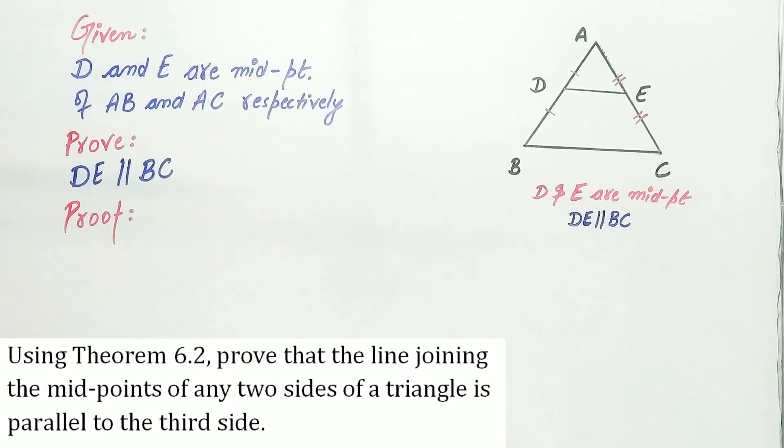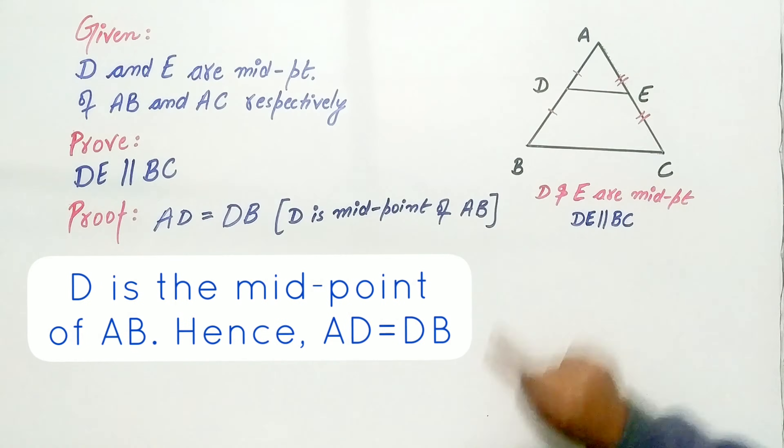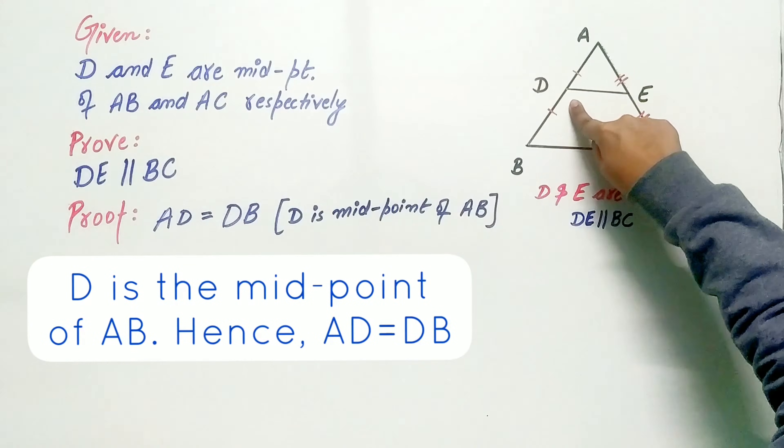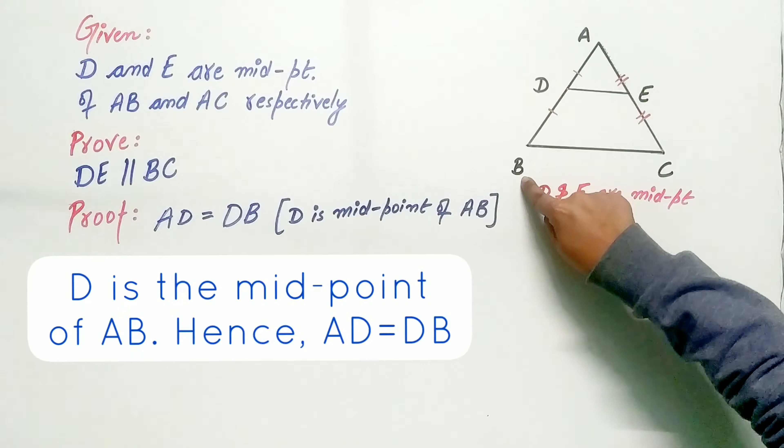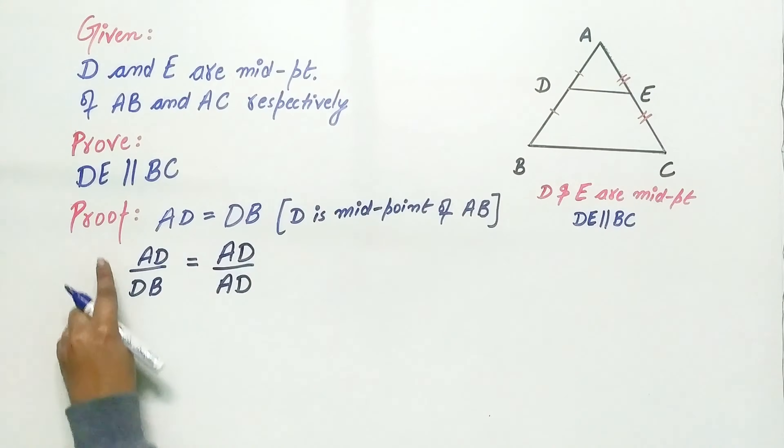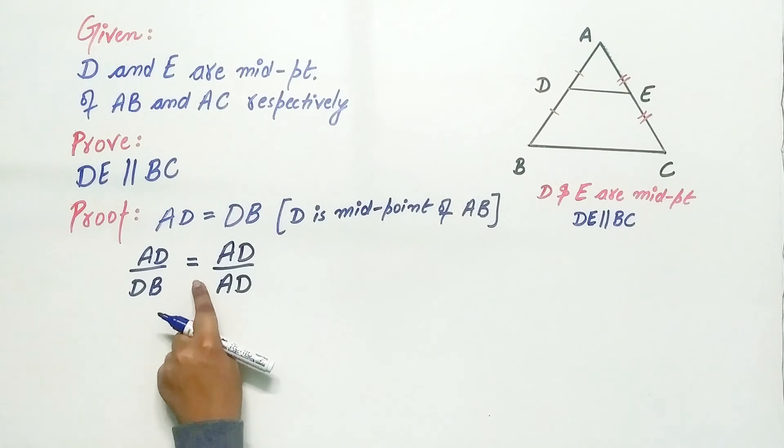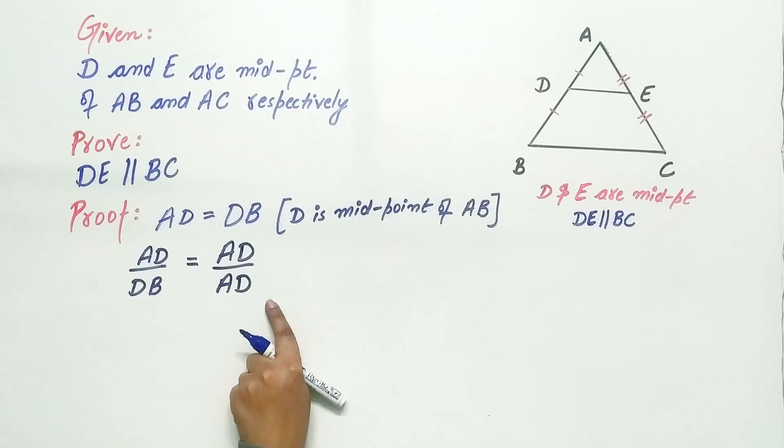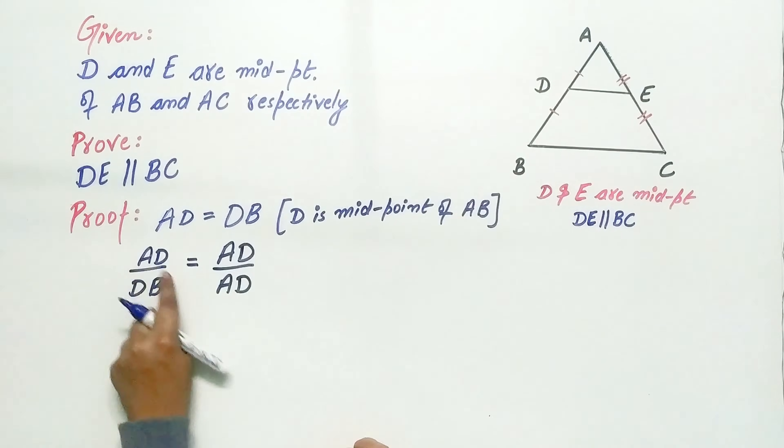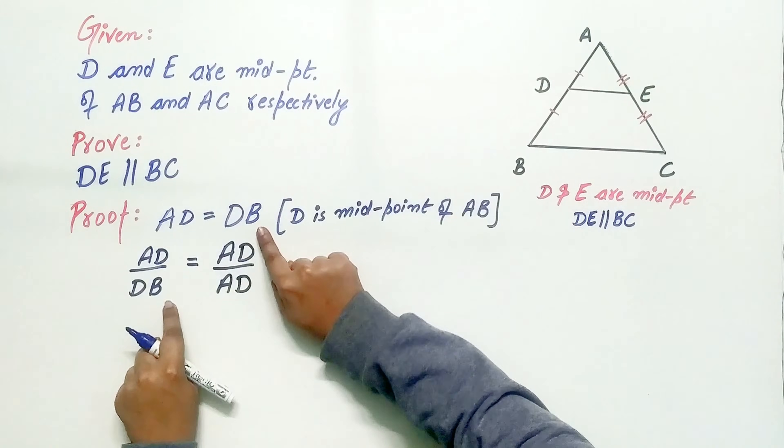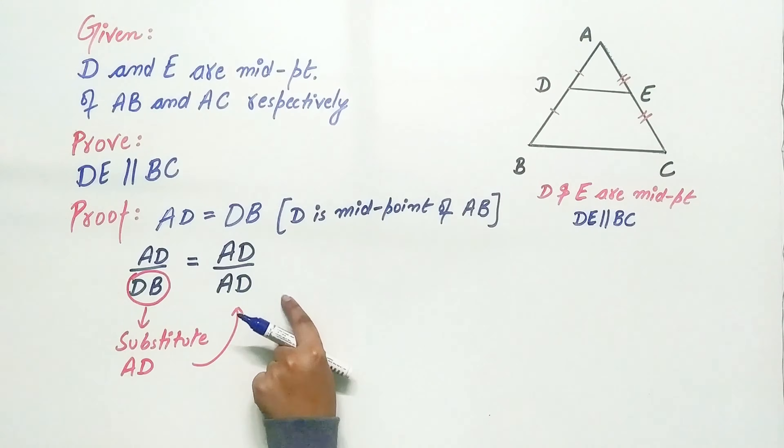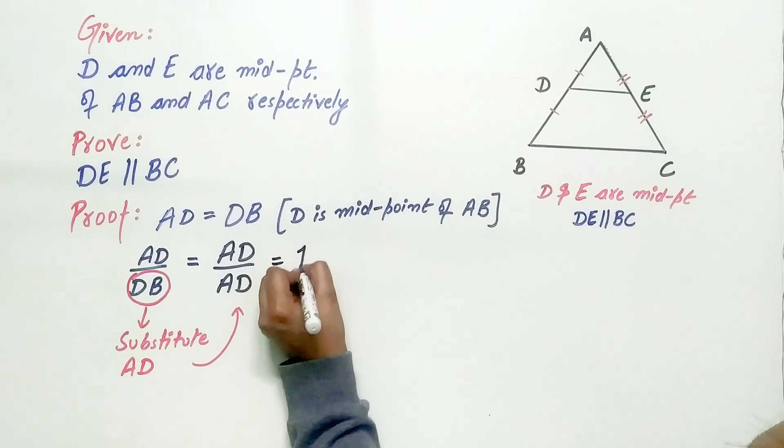By theorem 6.2, that simply means D is in the middle of AB. Now AD by DB is equal to AD by AD. Why? Because DB is equal to AD, and AD by AD is equal to 1.